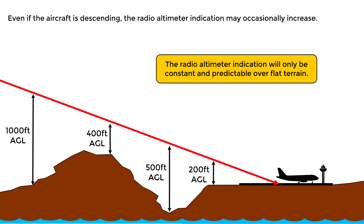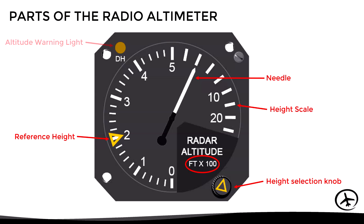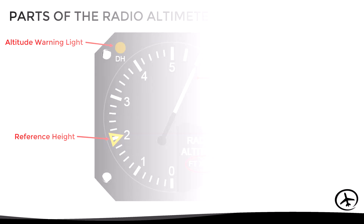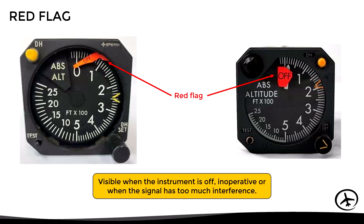Having seen how it works and the general considerations, let's look at the parts of the instrument. Here we have a typical analog radio altimeter. Here we can find the height scale, which normally is expressed in terms of hundreds of feet. We have the needle that indicates the current height, an adjustable height reference, a height selection knob, and an altitude warning light. Some analog radio altimeters also incorporate a red flag, which is visible when the instrument is inoperative or when the signal has too much interference, thus indicating that the instrument must not be used.